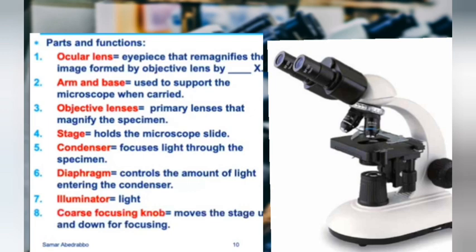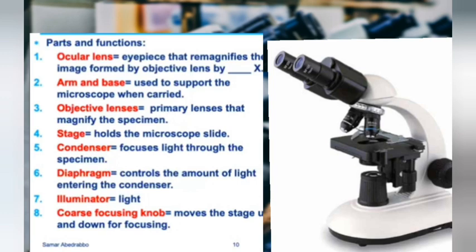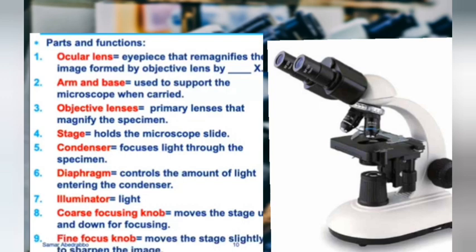The illuminator is just the light source. There's a coarse focusing knob, which is the big one, and the fine focus knob, which is the small one. The coarse focus knob moves the stage up and down — when you put your slide, you get it as close to the objective lens as possible using the coarse knob, then use the fine focus knob to sharpen the image.